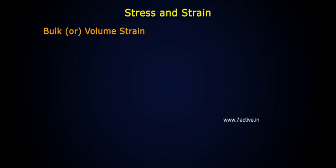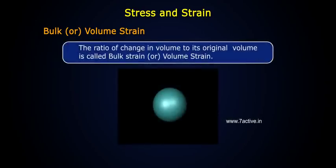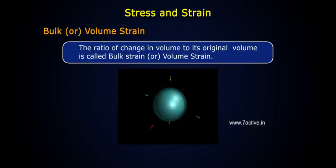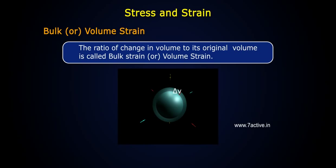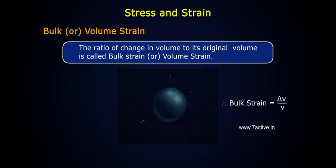2. Bulk or volume strain: The ratio of change in volume to its original volume is called bulk strain or volume strain. If V is the original volume of the body and delta V is the change in volume, then bulk or volume strain is equal to delta V by V.